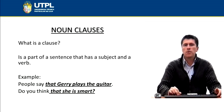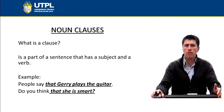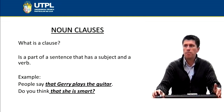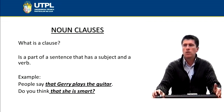Noun clauses. It is important that you understand what a clause is. What is a clause? Well, a clause is a part of a sentence that has a subject and a verb. I have written two examples so you can see what the noun clause is. People say that Jerry plays the guitar — that Jerry plays the guitar would be the noun clause. You will also find noun clauses in a question: Do you think that she is smart? That she is smart is the clause.